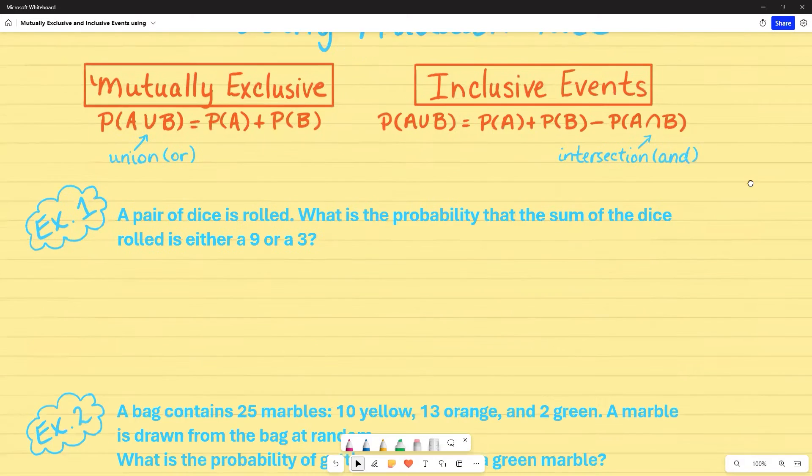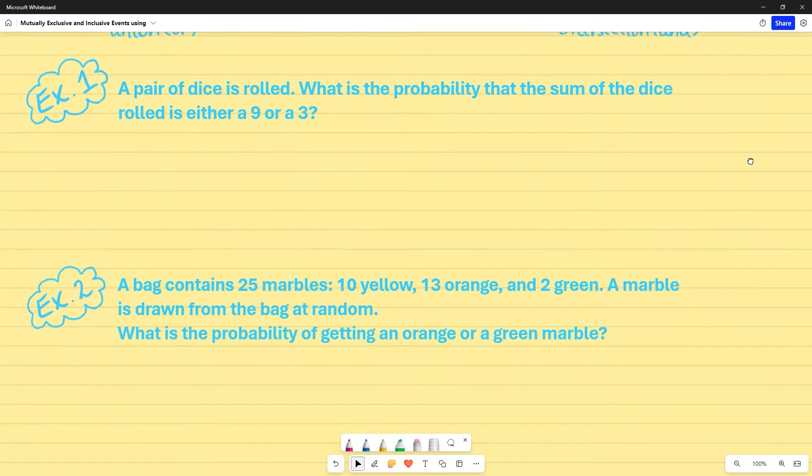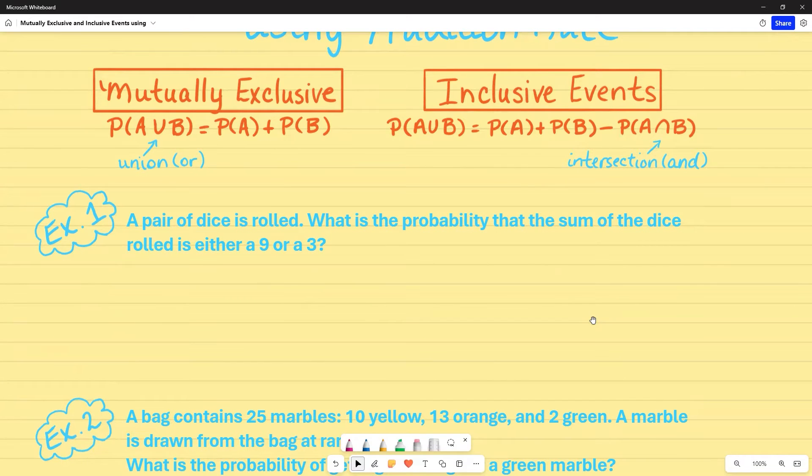For example one, a pair of dice is rolled. What is the probability that the sum of the dice rolled is either a nine or a three? So you have to ask yourself, when I'm rolling the dice, is it possible for me to have a sum of both a nine and a three? If not, that means that it's mutually exclusive. This is what this problem would look like. You want to just set it up based off of what you know.